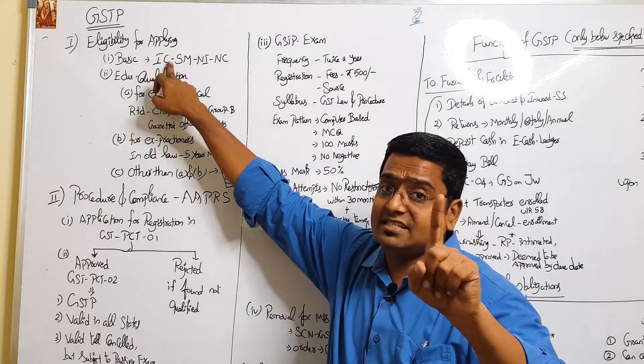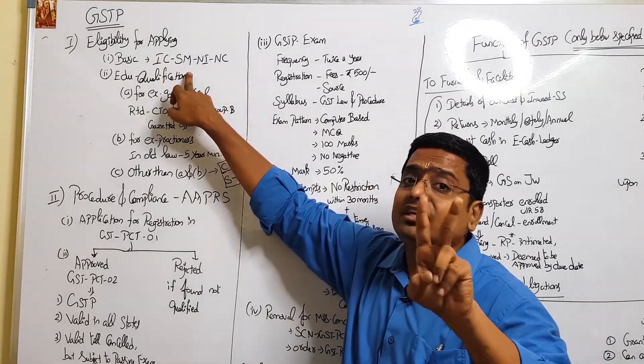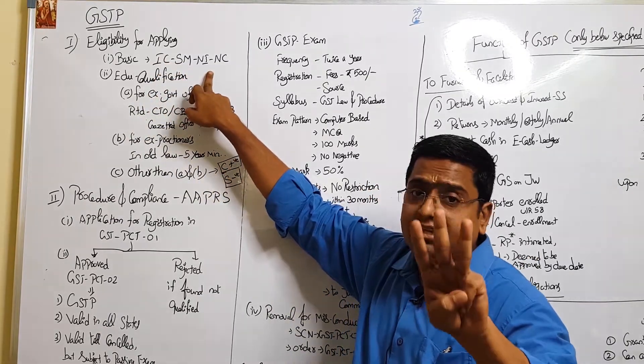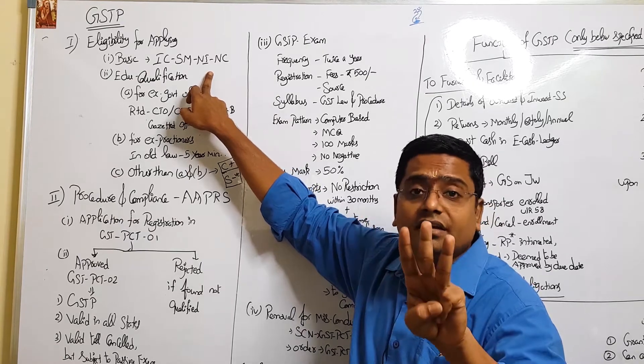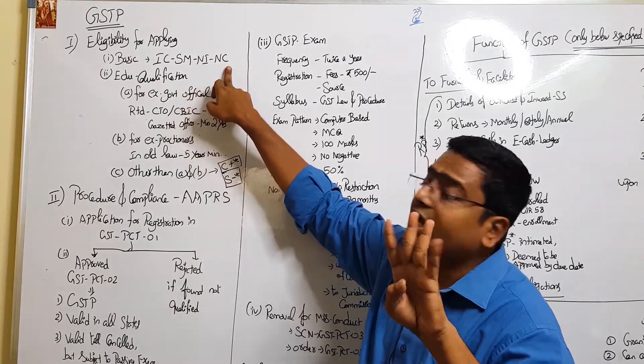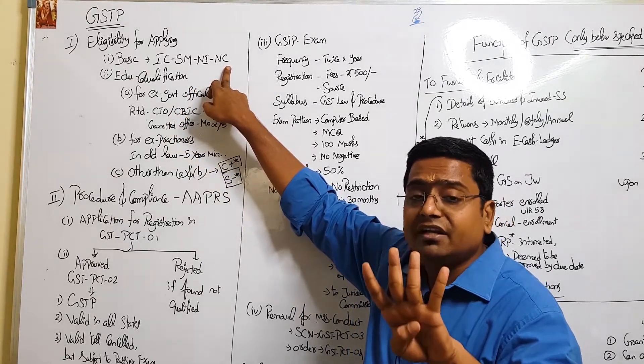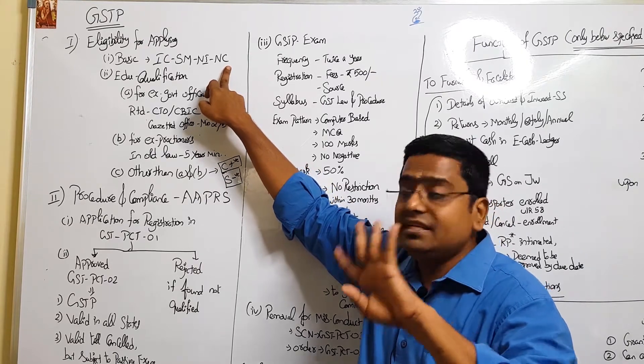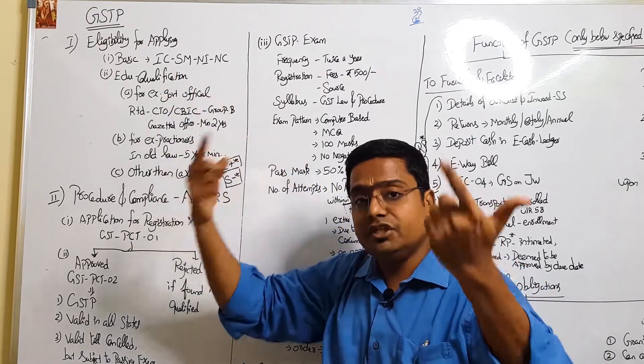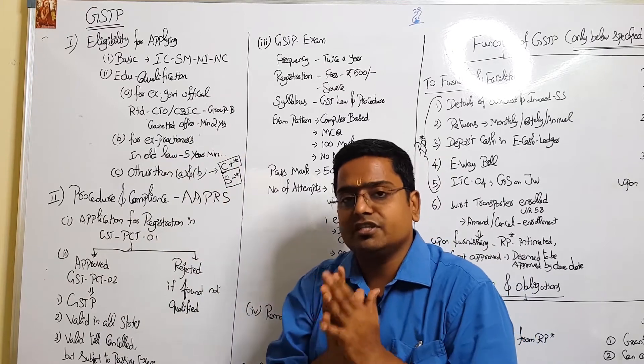Point number one: he must be an Indian citizen (IC). Two: he must have a sound mind (SM). Three: he must not be declared insolvent (NI). And last: he must not be convicted in a court of law (NC). So these are the four basic qualifications.